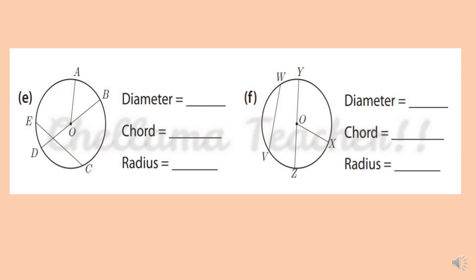For picture E: diameter is DB, chord is EC, and radius is OA. For picture F: diameter is YEJ, chord is WV, and radius is OX.